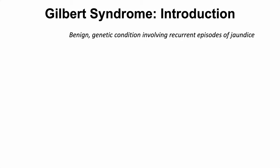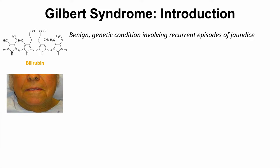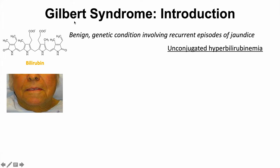Gilbert syndrome is a benign genetic condition involving recurrent episodes of jaundice. Jaundice is yellowing of the skin and the whites of the eyes, caused by high levels of a pigmented compound known as bilirubin. The key with regards to Gilbert syndrome is that it is an unconjugated hyperbilirubinemia.